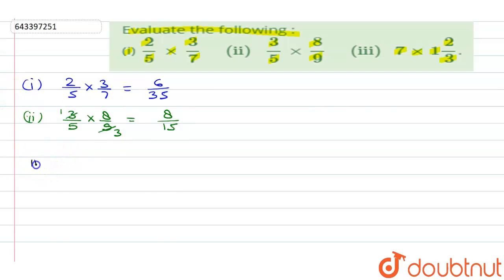Let's go to the third question. In the third question we have to multiply 7 with 1 2 upon 3. So first we'll convert this mixed fraction to improper fraction. We'll get here 3 times 1 is 3, 3 plus 2 is 5 upon 3. 7 can be written as 7 upon 1.